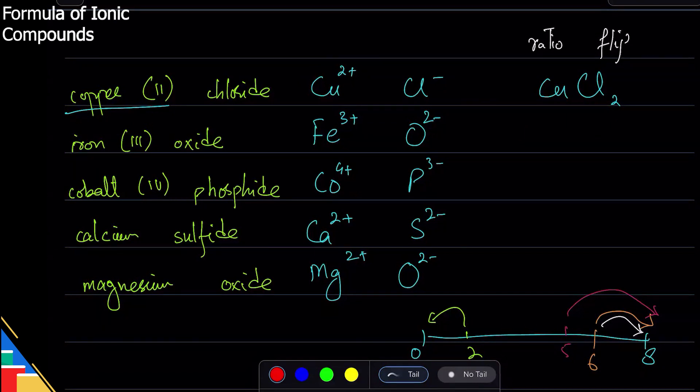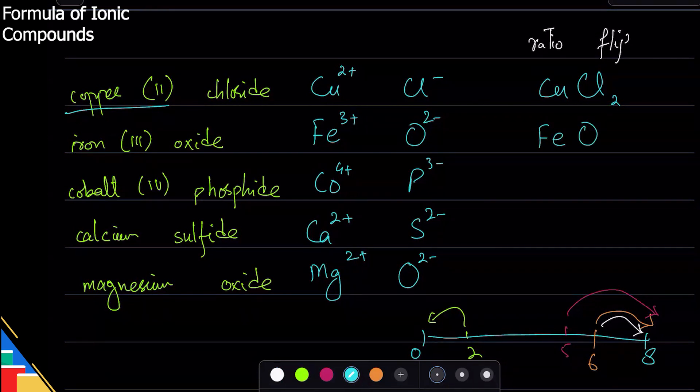Remember, atoms are neutral - just like that, compounds are also neutral. The charges cancel each other. So let's take one more example: iron three oxide. I have iron and oxygen. The ratio is three and two, so flip it - two and three. I write it - that's the formula, Fe2O3.